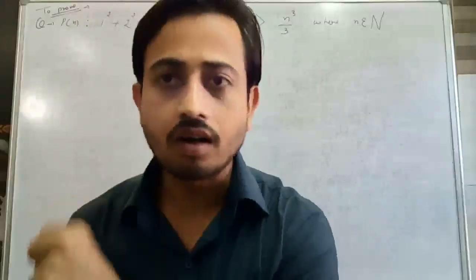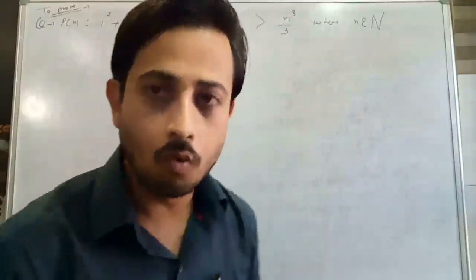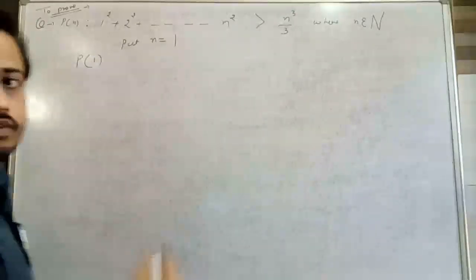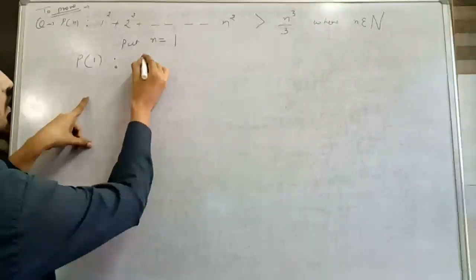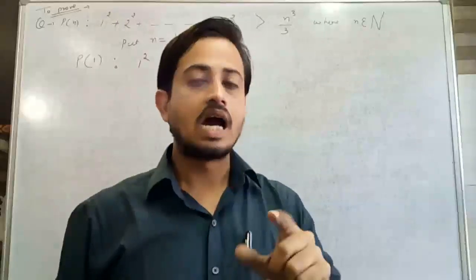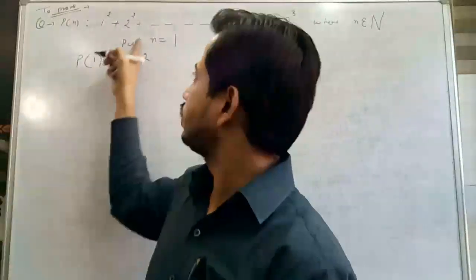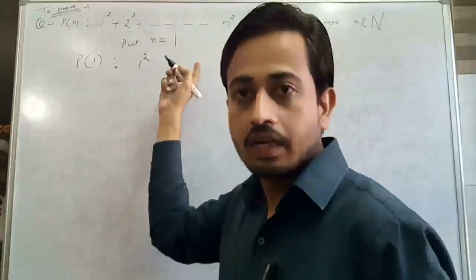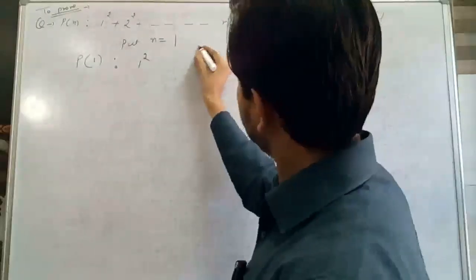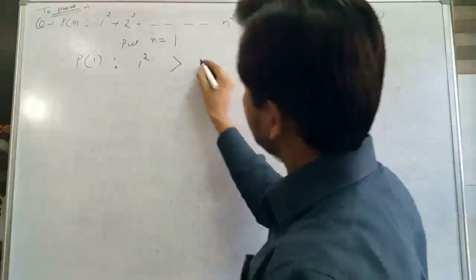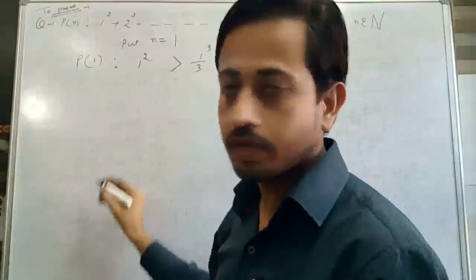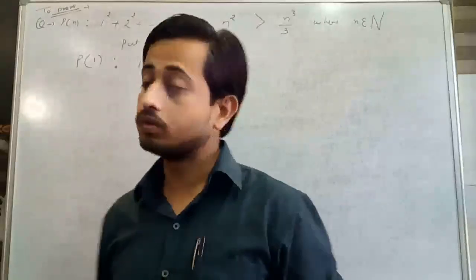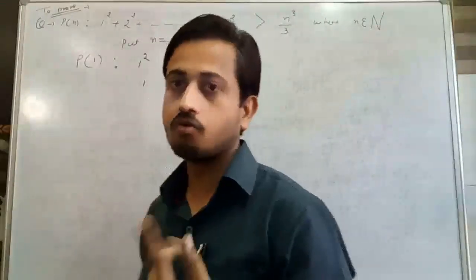Step 1: Put n = 1 to check whether the statement is valid or not. Taking n = 1 means only one term: 1² = 1. On the right side, 1³/3 = 1/3. Since 1 > 1/3, which is true because one is greater than one-third — we have three fractional parts of one — the statement is true for n = 1.